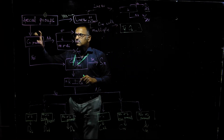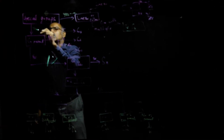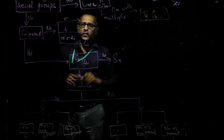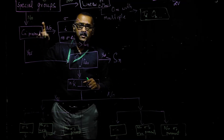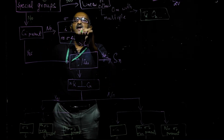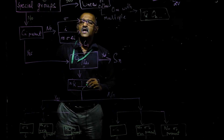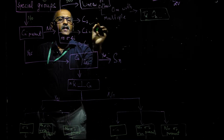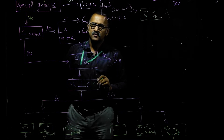If the molecule is not a special type, the answer is no. We then check whether it has a Cn axis. If the molecule does not contain a Cn axis, we come to this branch. If it has a sigma plane, the point group is Cs. If it has an inversion center, the point group is Ci. And if there is no sigma plane and no inversion center, that is a very special group called C1.